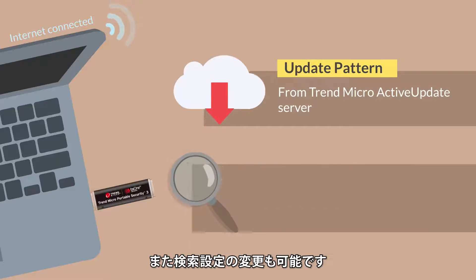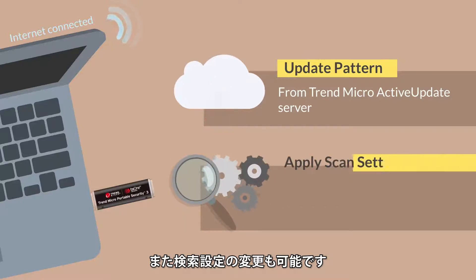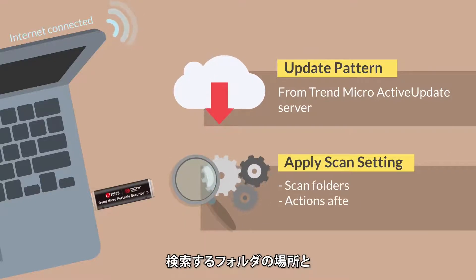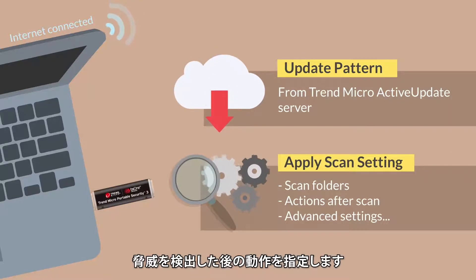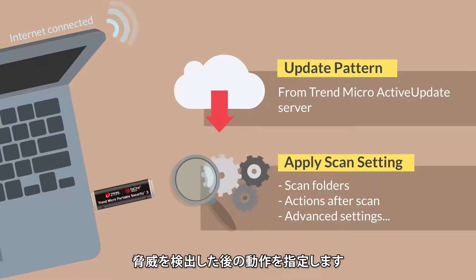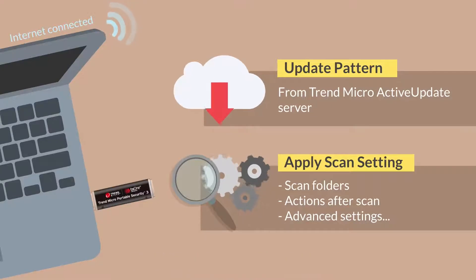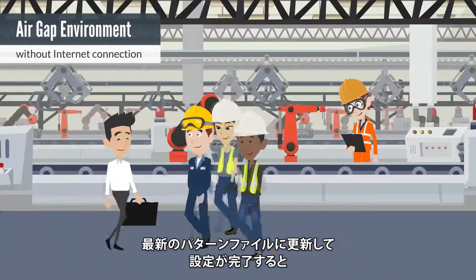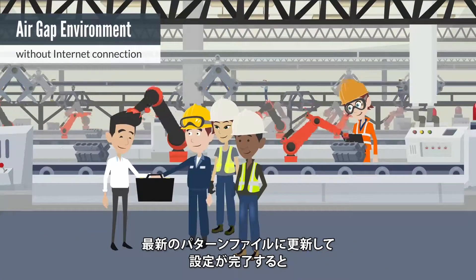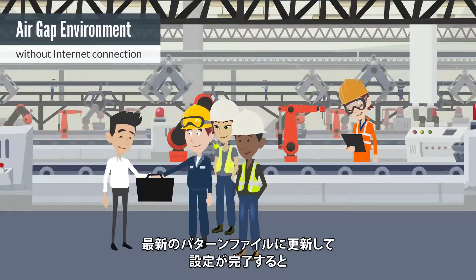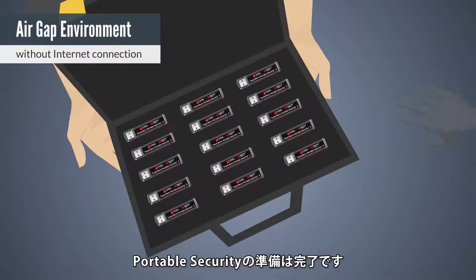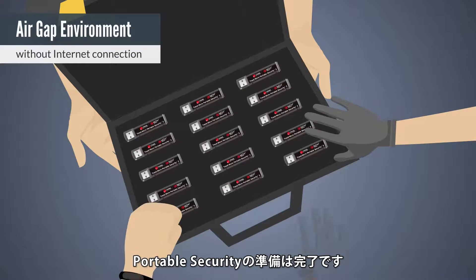You can also configure scan settings, specify the folder locations to scan, and specify what action the scanning tool takes after detecting a threat. Once the latest pattern files are updated and the settings are ready, the portable security is ready to scan.